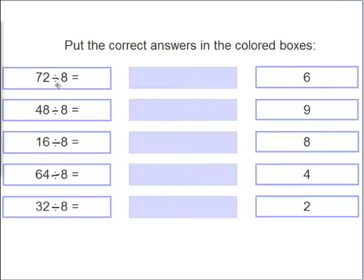72 divided by 8 equals what? 6, 9, 8, 4, or 2? Yes, it is 9. 72 divided by 8 equals 9. 48 divided by 8. 48 divided by 8 equals what? Yes, 6.